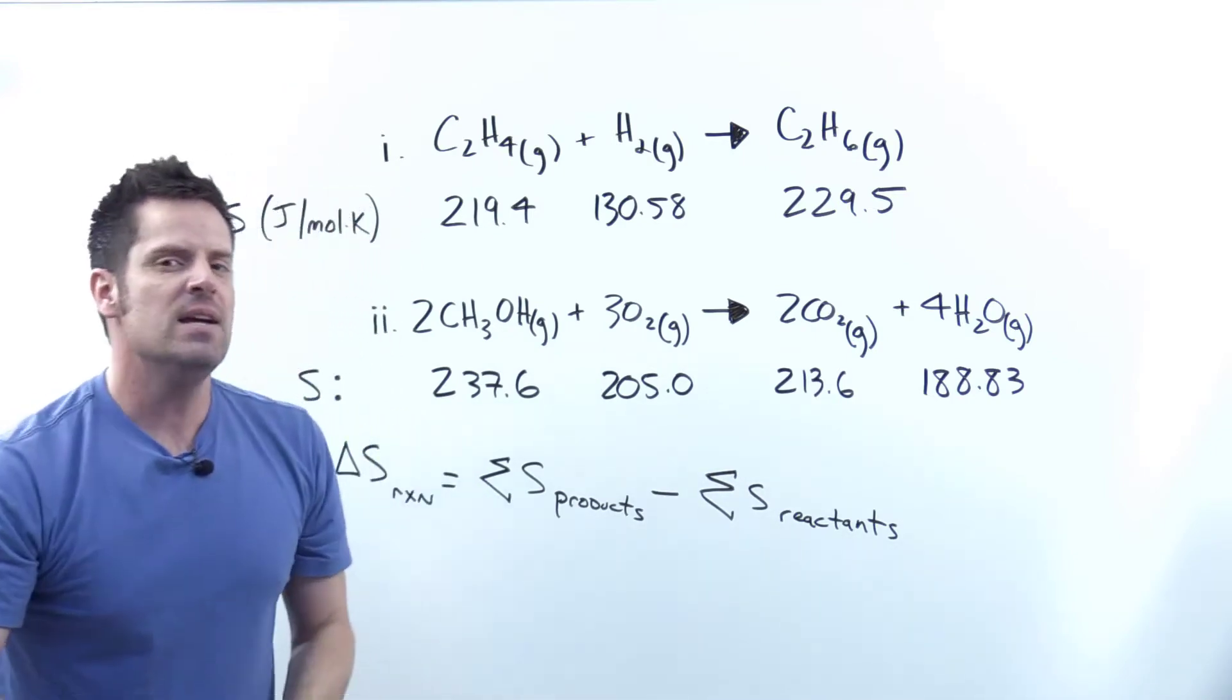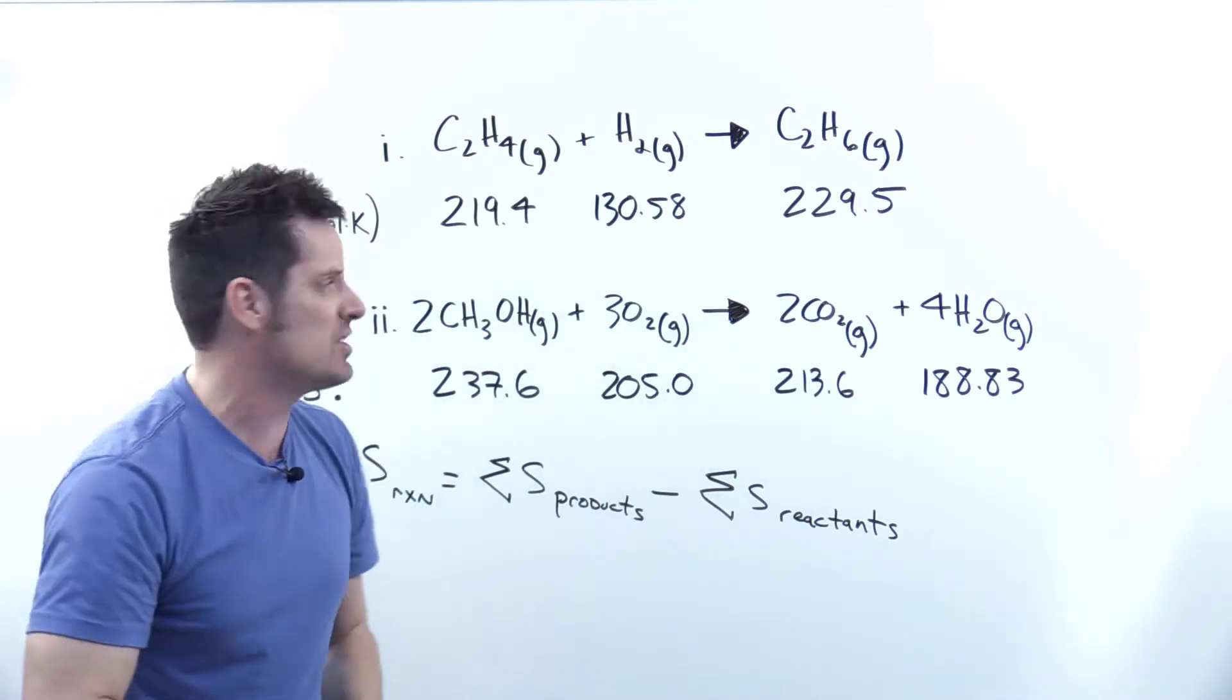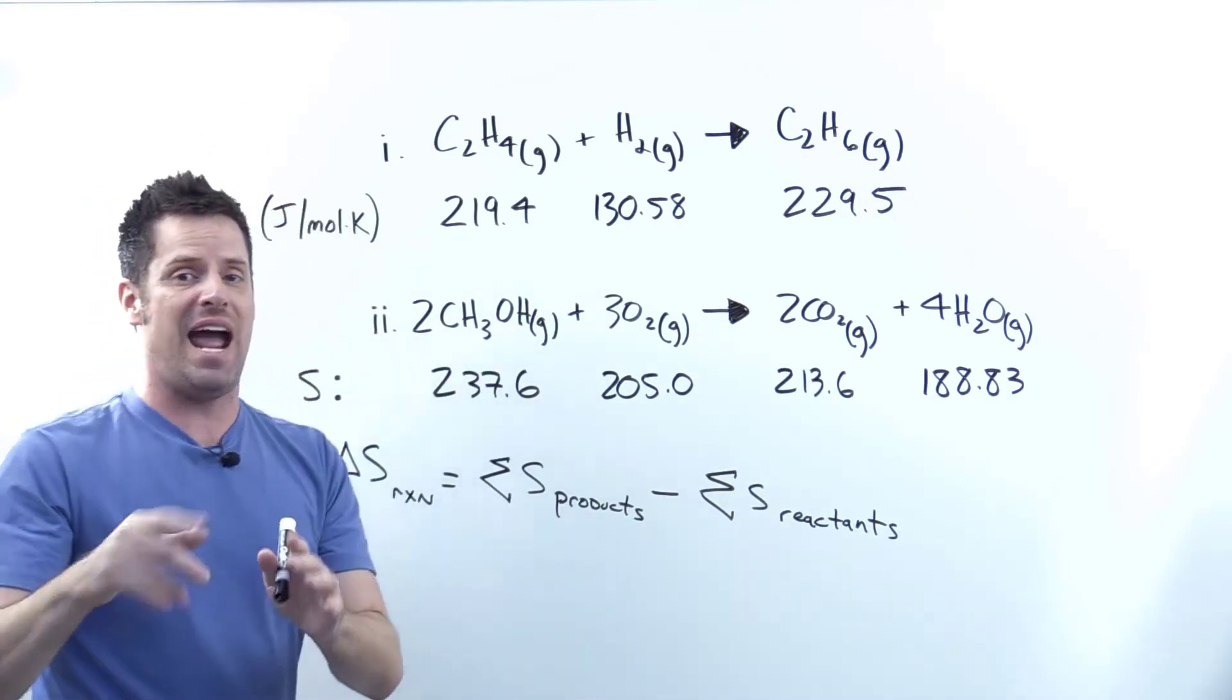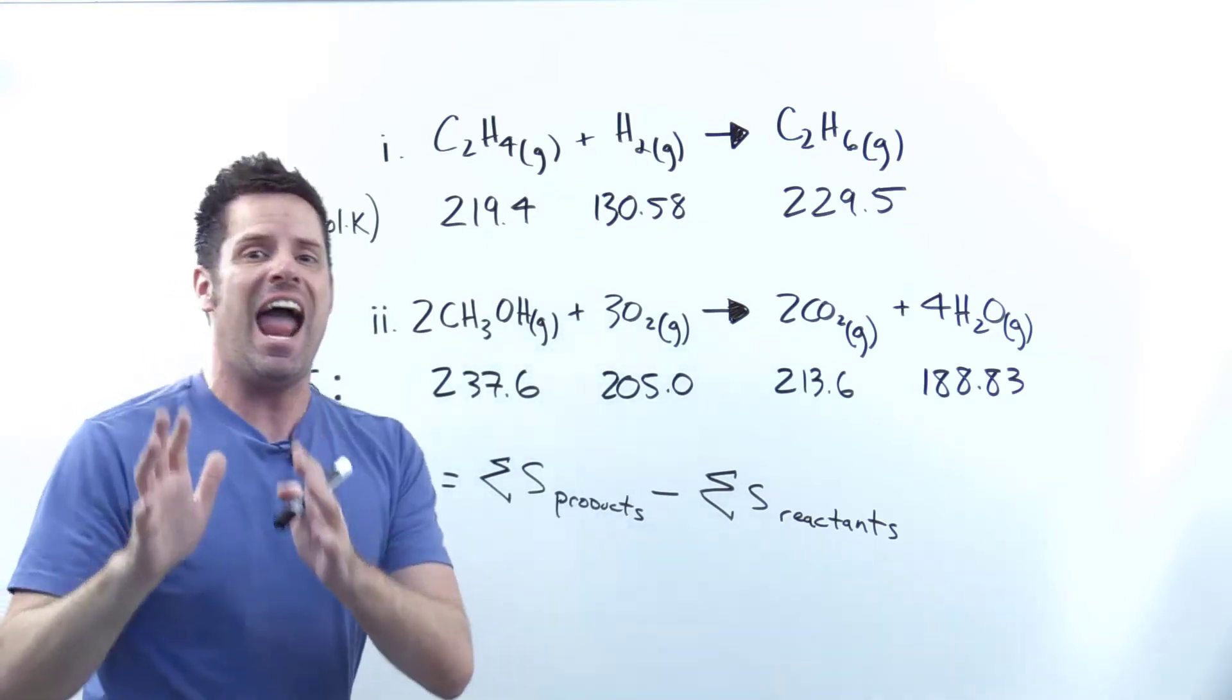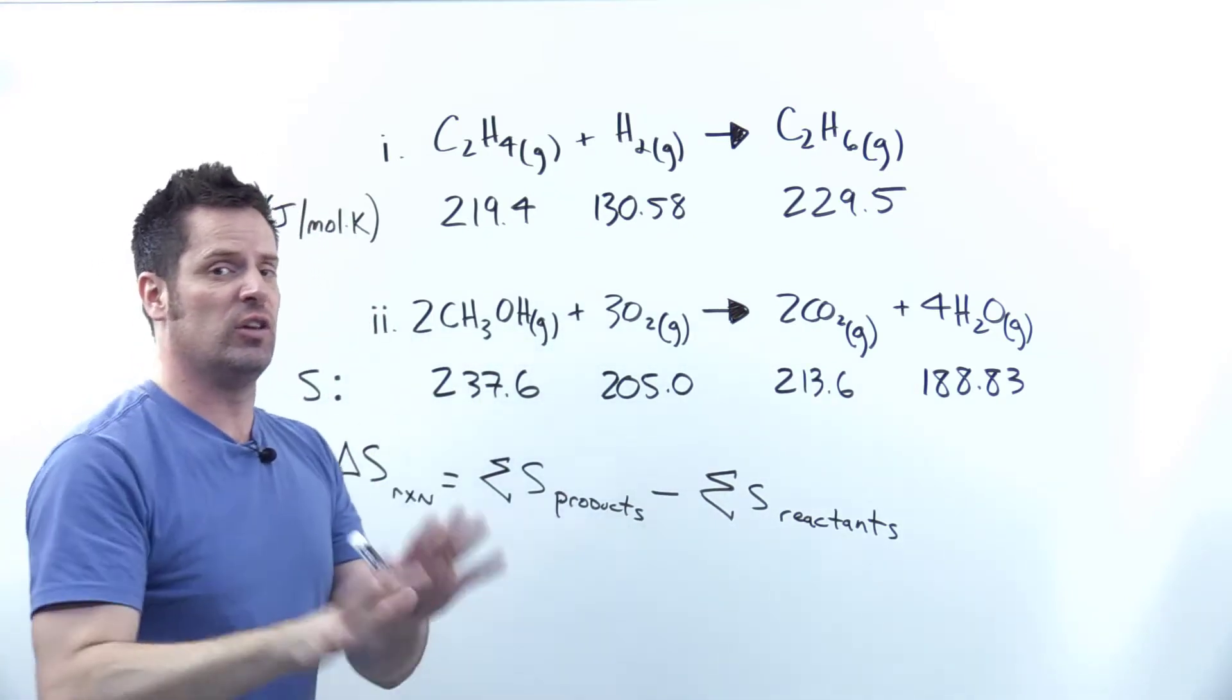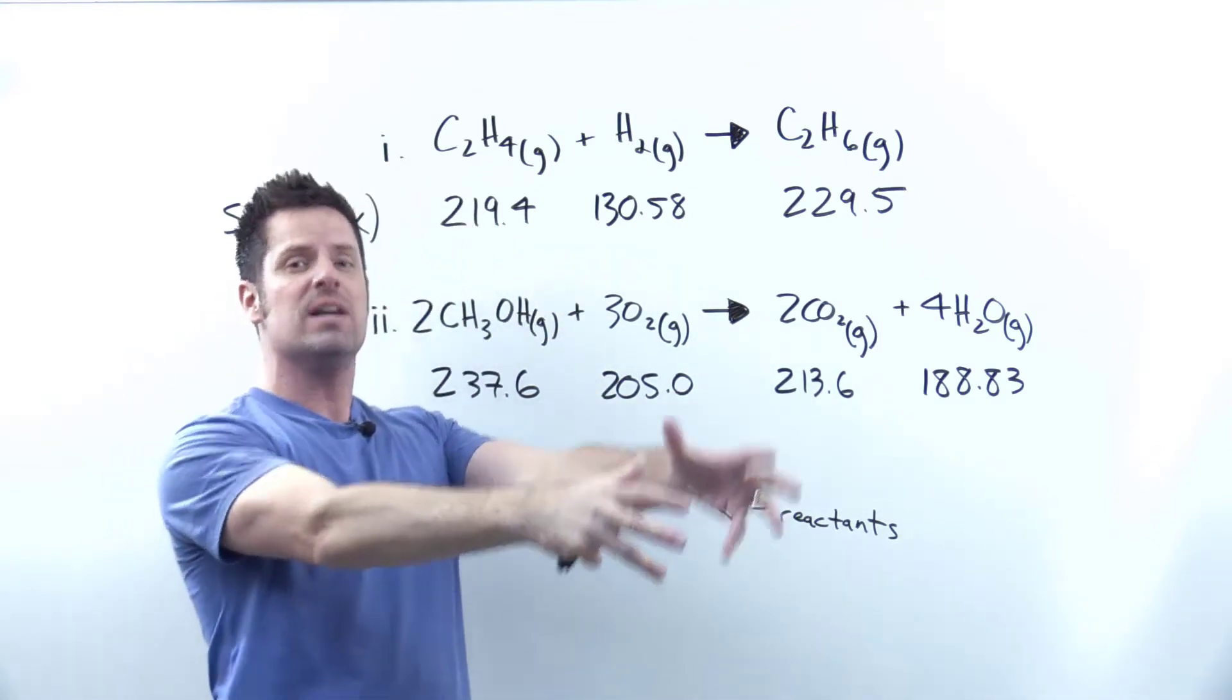One thing I need to point out is that delta S is not the same thing as a regular S. S without the delta is an individual term that each substance in existence has. S can never be negative; the lowest it could possibly be is zero if you go all the way down to zero Kelvin, which is also negative 273.15 degrees Celsius.